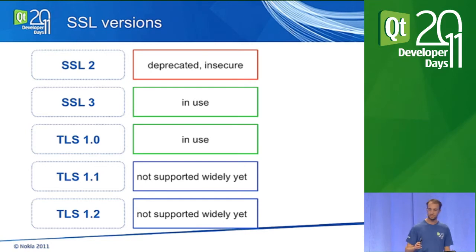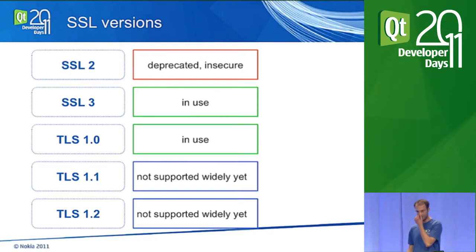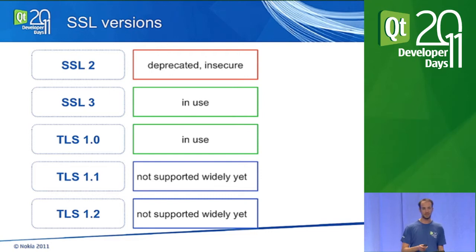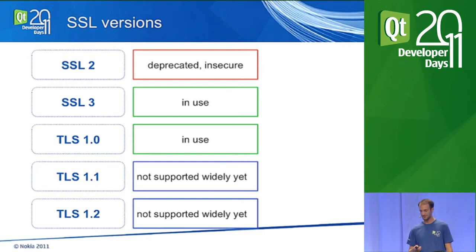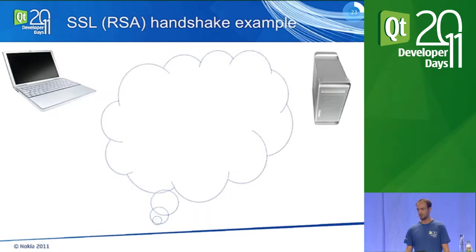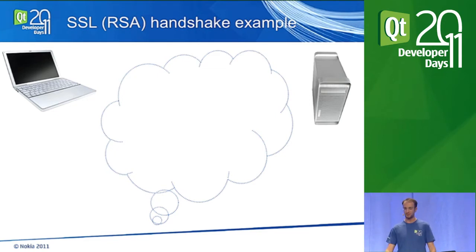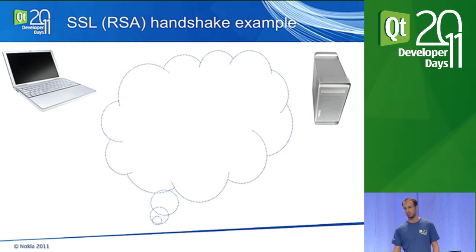How many of you have heard of the BEAST attack? It was an attack on TLS 1.0 which was solved in TLS 1.1 — that's one benefit of TLS 1.1. Now let's look at a simple example of how SSL works. You have your client on the left, your server on the right, communicating over the network, which is considered insecure — for example, a public Wi-Fi.